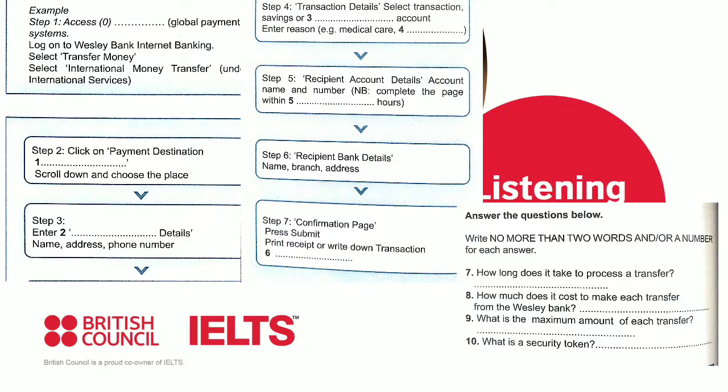Is there much more? After the account details, you'll need to fill in the bank details of the person you're transferring money to: the name, branch and address of the bank. That should be easy enough. Anything else? No. Once you've completed everything, a confirmation page will appear. Just ensure all the information you've entered is correct and press submit. Then print off the receipt page. If you haven't got a printer at home, just make a note of your transaction reference number.